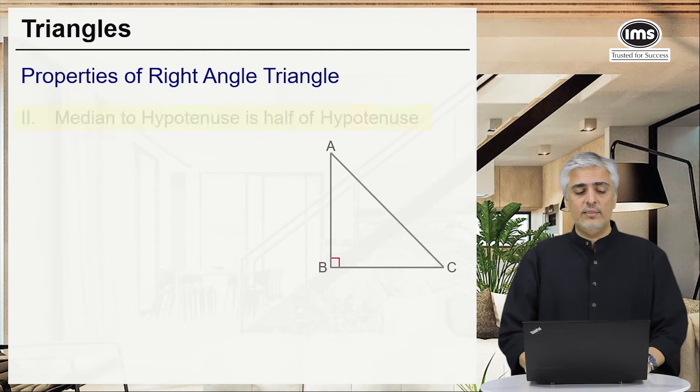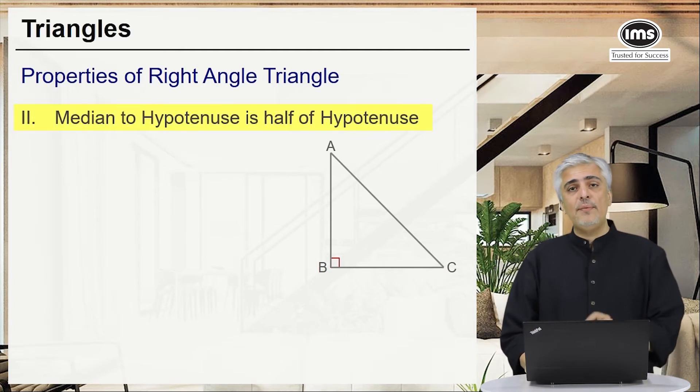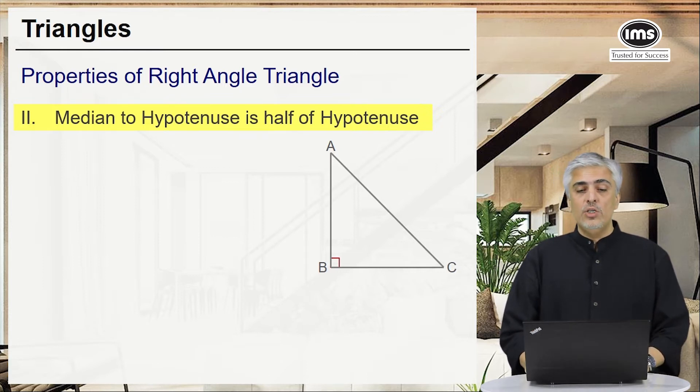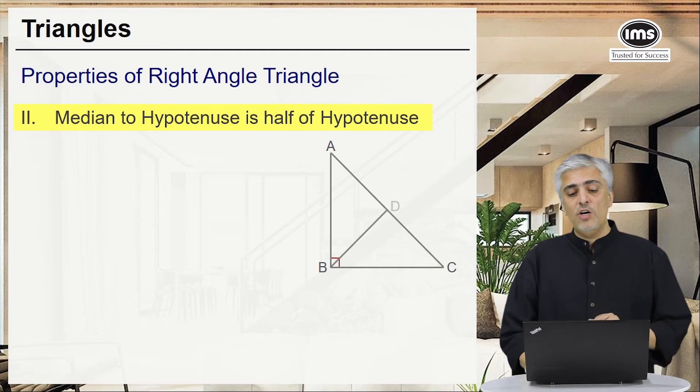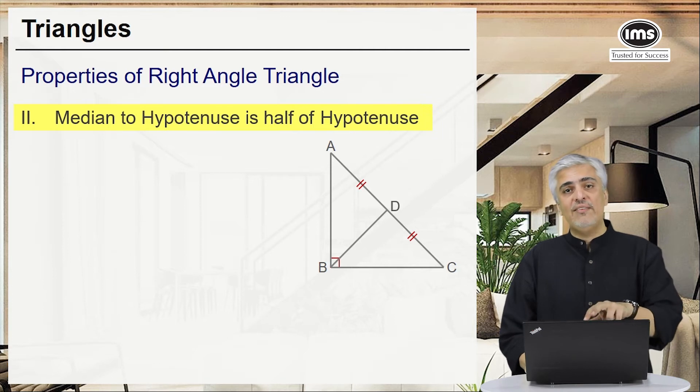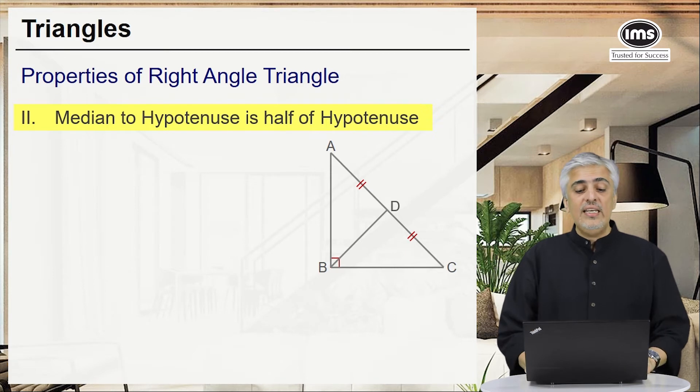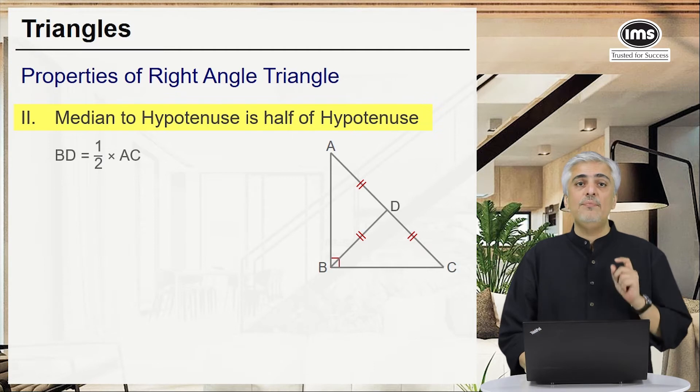Let's go to the next one. Median to the hypotenuse is half of the hypotenuse. In your earlier videos you've already studied what's a median. So from B, if I draw a median BD to the hypotenuse, then obviously BD divides AC into two parts AD and DC which are equal. Then BD itself will also be half of AC. So the property states the median drawn to the hypotenuse will be half of the hypotenuse.